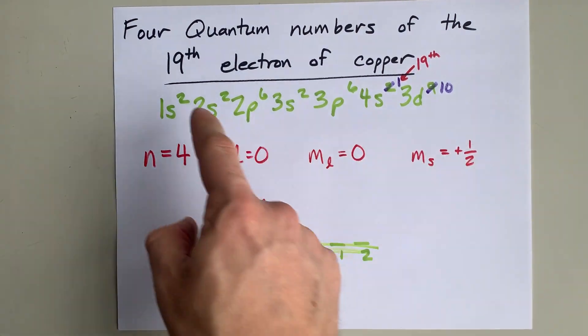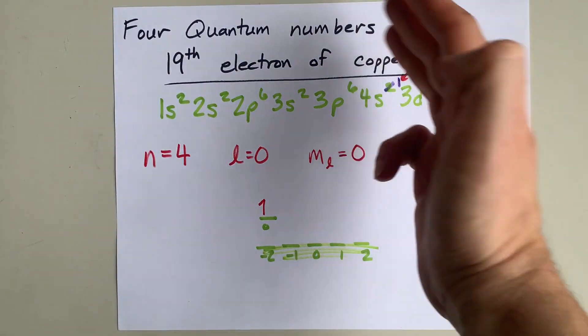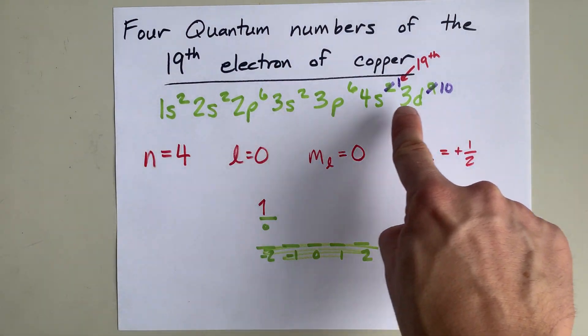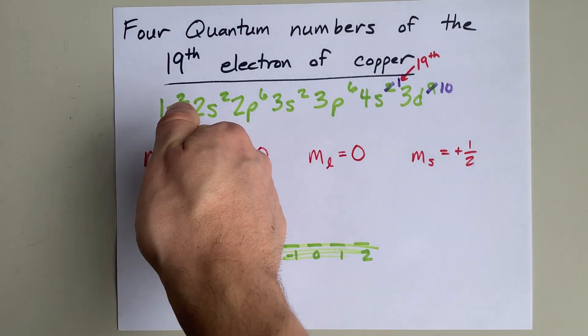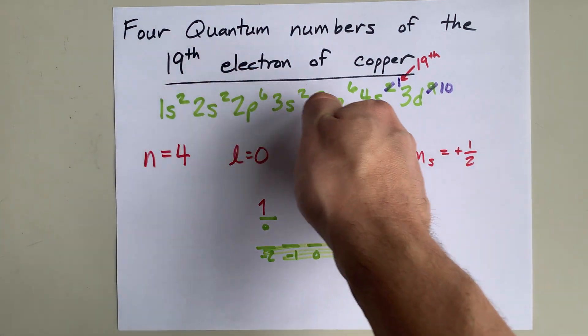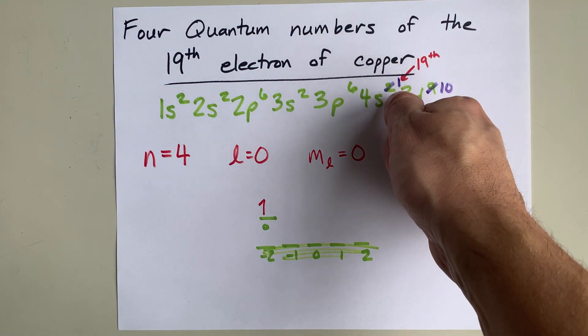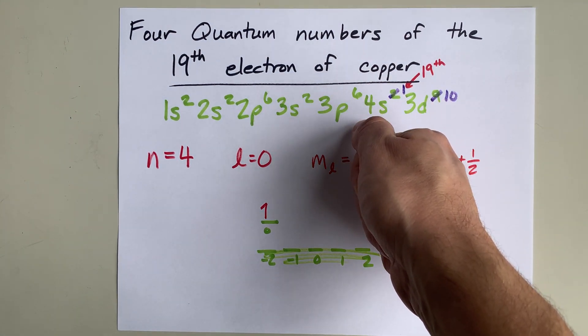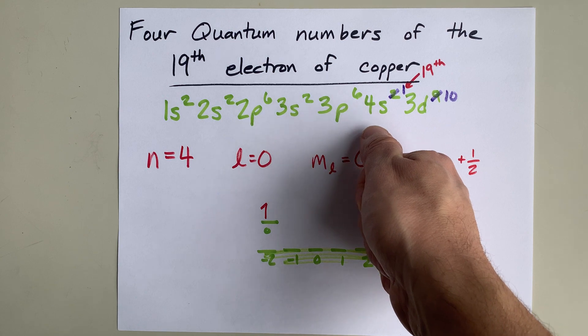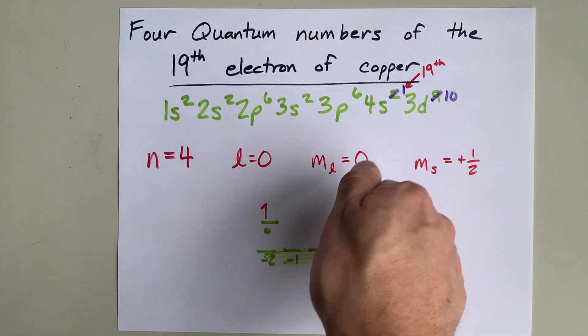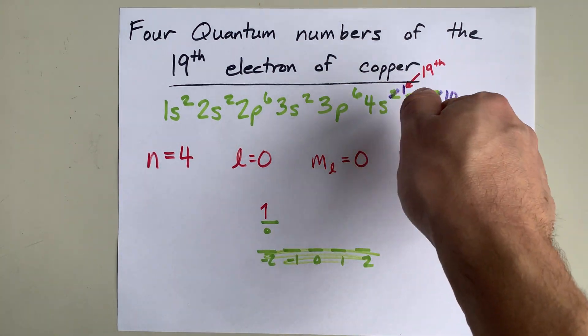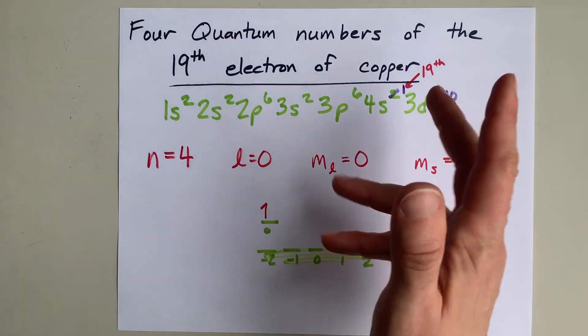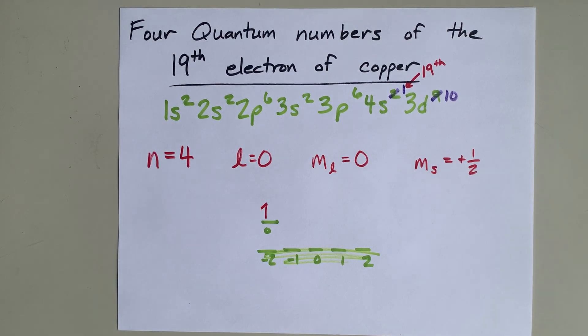Anyways, the point is you can figure out the four quantum numbers for any electron in an atom by getting yourself the full electron configuration, counting up to see where your nth electron is—in our case, the 19th. The orbital, or the subshell that it's in, gives you both N and L. Then you can figure out ML by how many of the electrons you've already used up inside your subshell. Thanks for being with me, and best of luck.